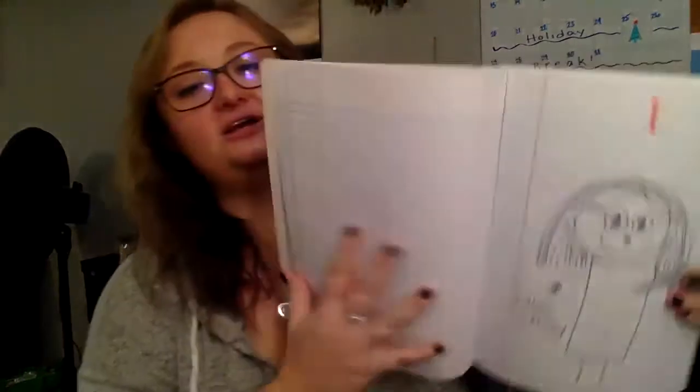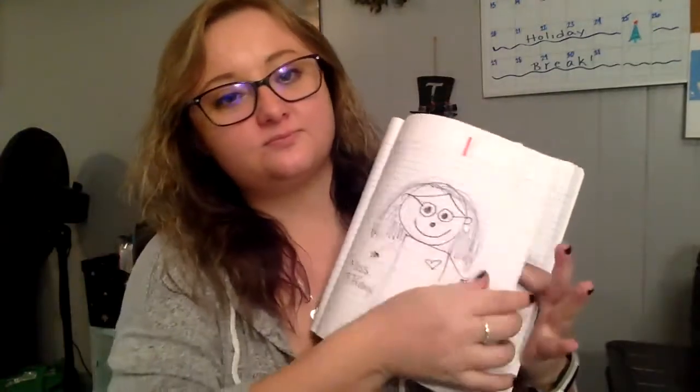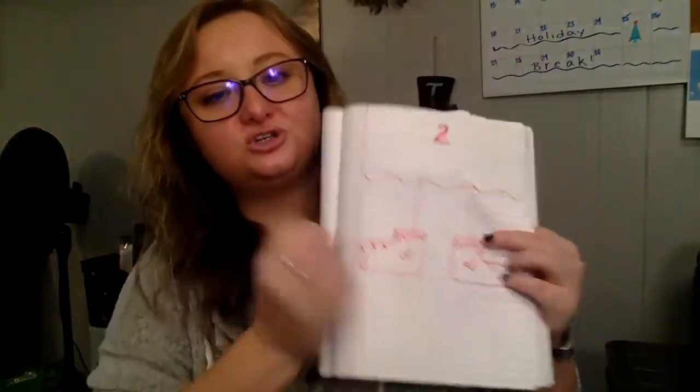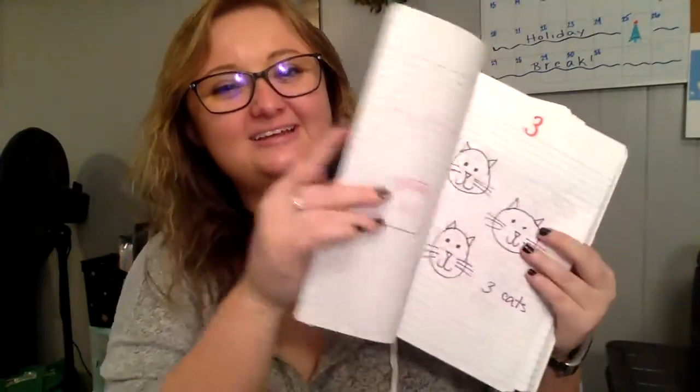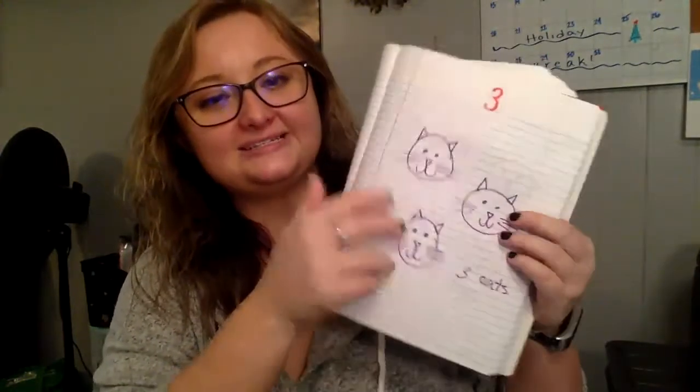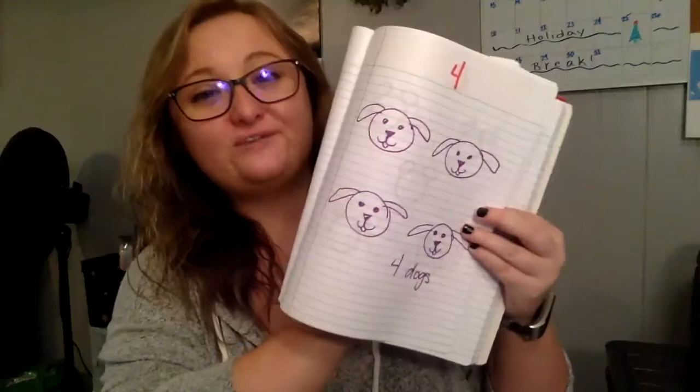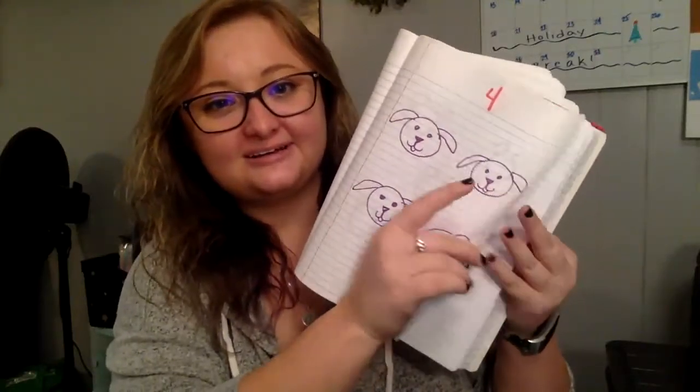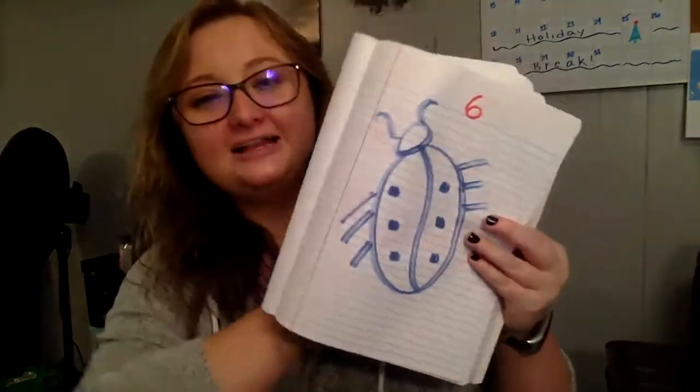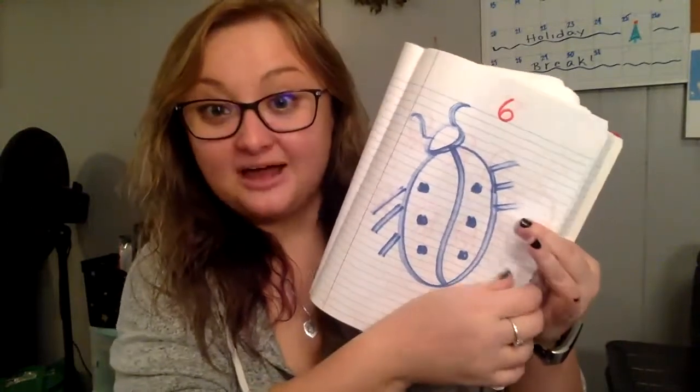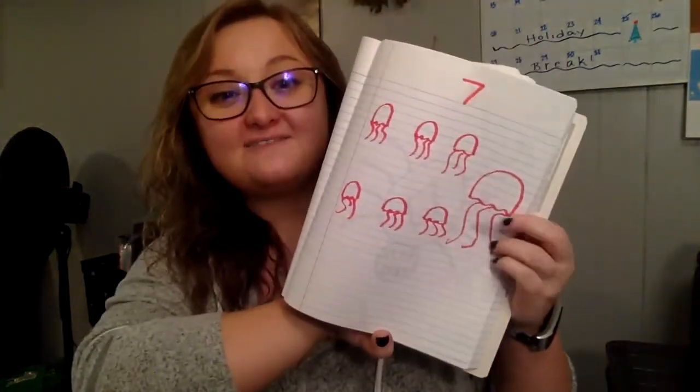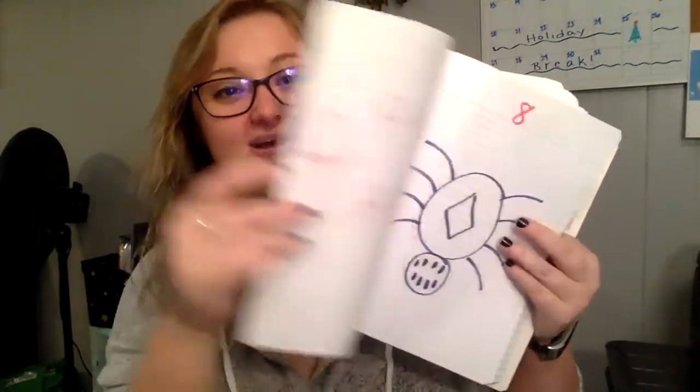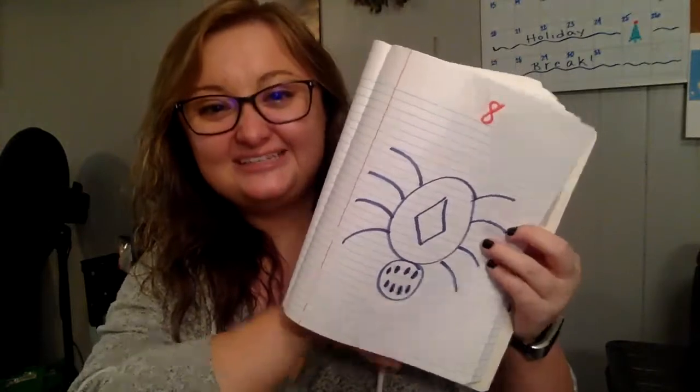We've drawn lots of pictures for our numbers, haven't we? We drew one U, two shoes, three cats, four dogs, five Mickey Mouse ears, a ladybug with six feet and six spots, seven jellyfish, and a spider with eight legs and eight eyes.